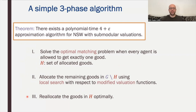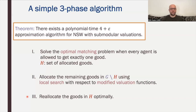The algorithm consists of three phases. In the first phase, we isolate a set of really valuable goods by solving an optimal matching problem — equivalently, we maximize Nash welfare under the requirement that each agent gets exactly one good. This allocates some set of N goods which we put aside. Then on the rest of the goods we perform a local search with respect to modified valuation functions. Finally, once the local search is done, we reallocate the goods set aside in phase one optimally.